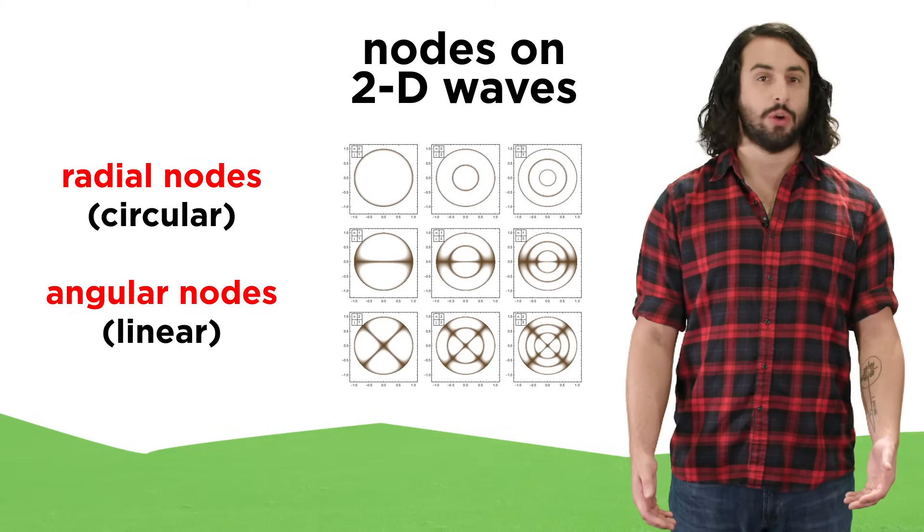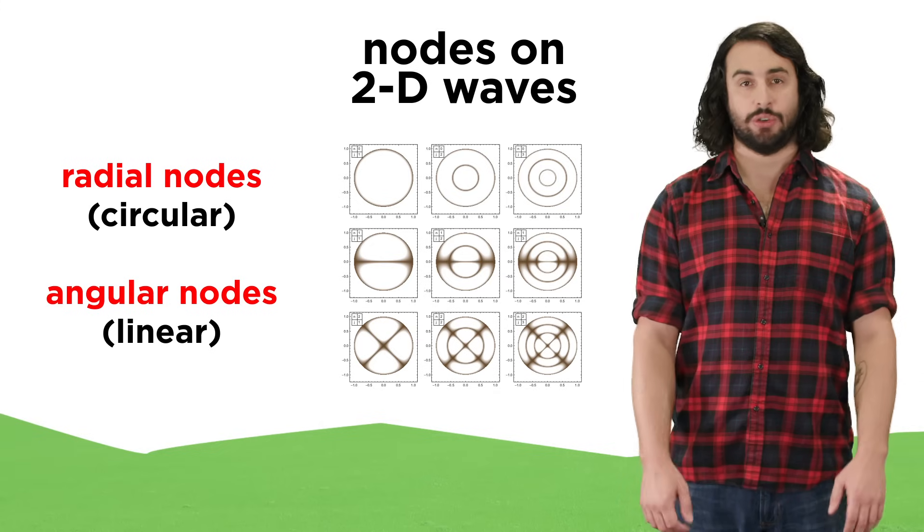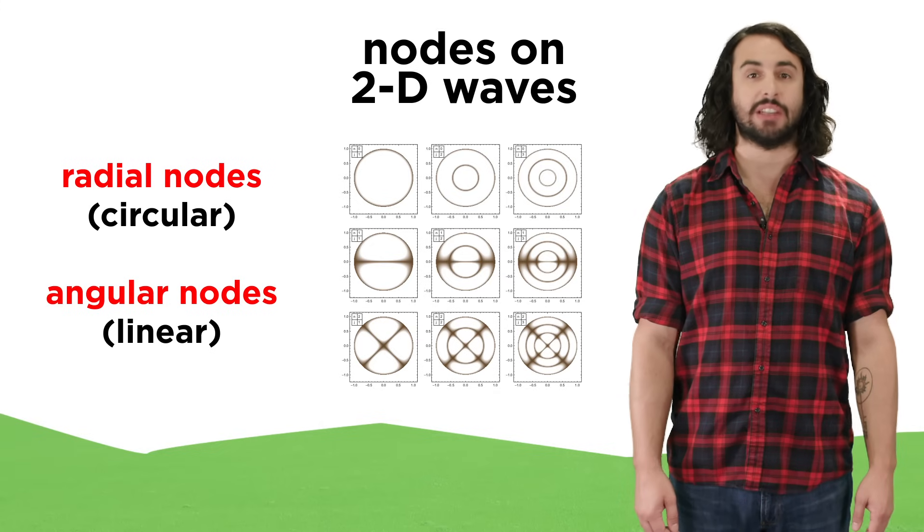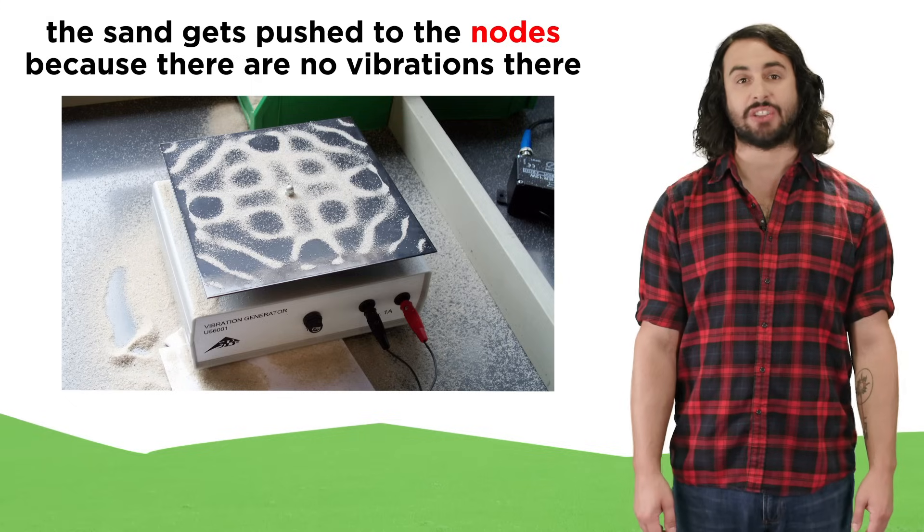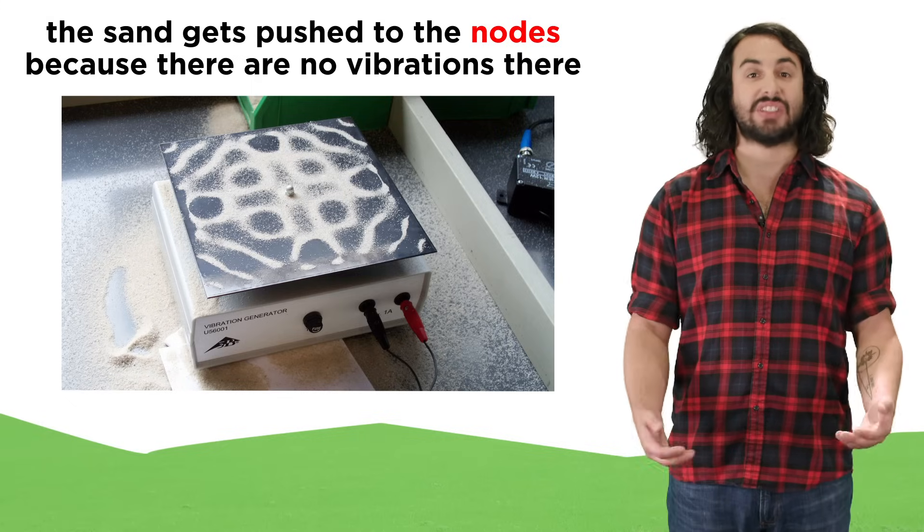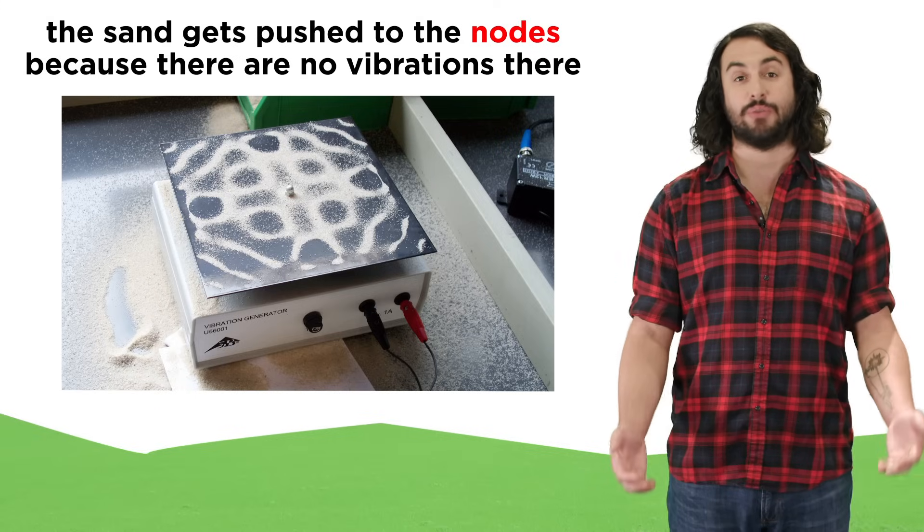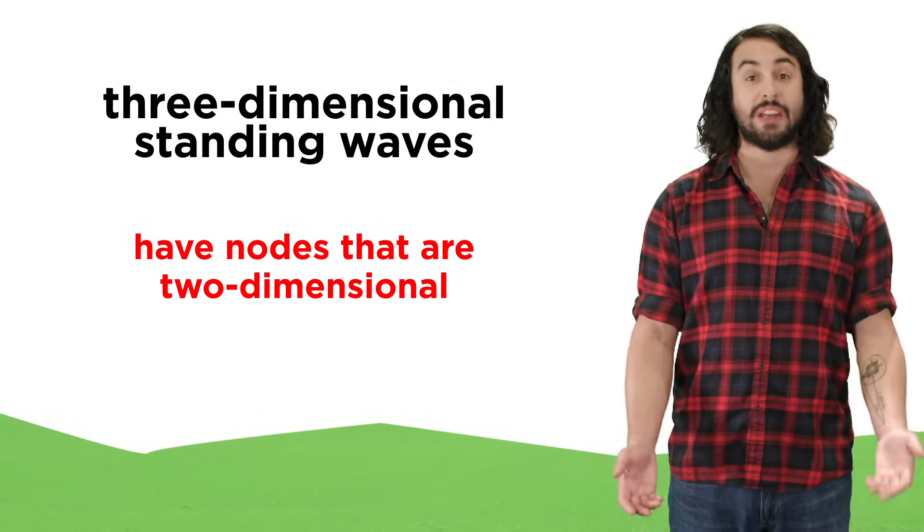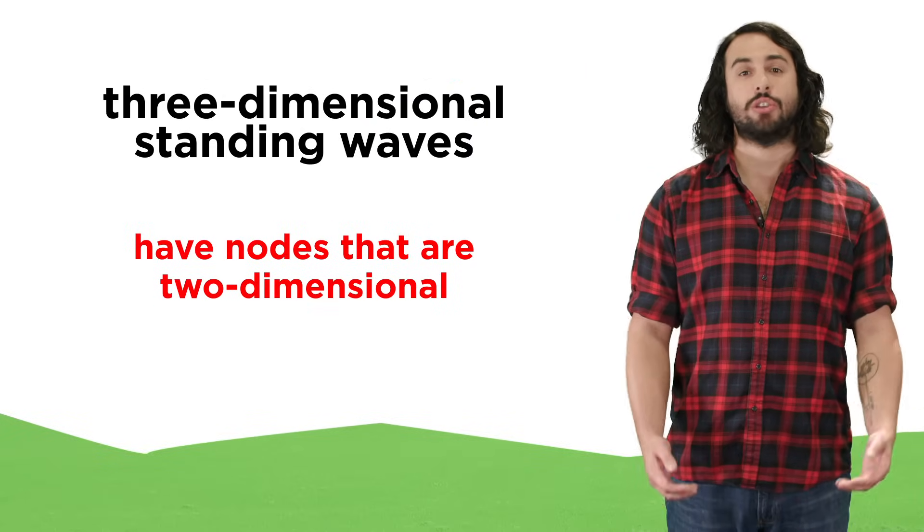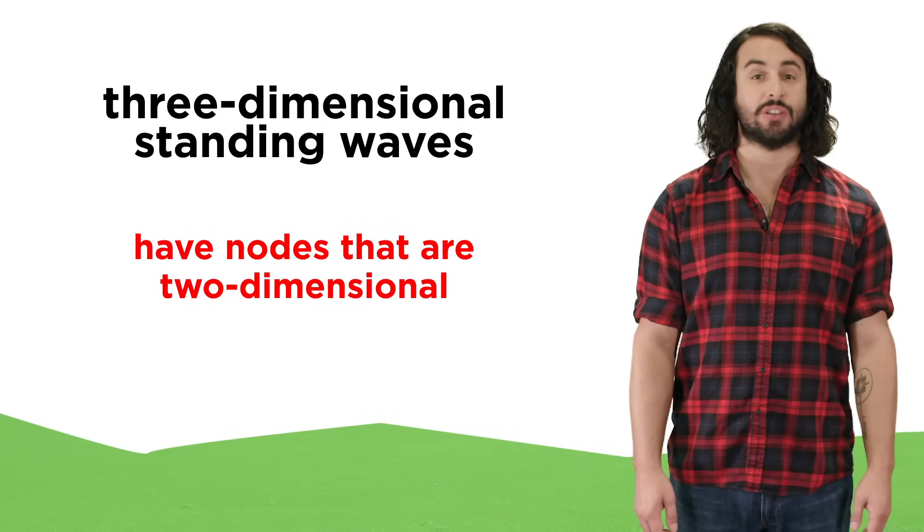These can be radial nodes, which are circles of a particular radius, and angular nodes, which are lines at particular angles. These nodes can be visualized if we place sand on a vibrating surface. The sand gets pushed over to the nodes by the vibrations, and this helps us visualize the two-dimensional standing wave. A three-dimensional standing wave would have two-dimensional planes as nodes, but we will have to use our imaginations for that.